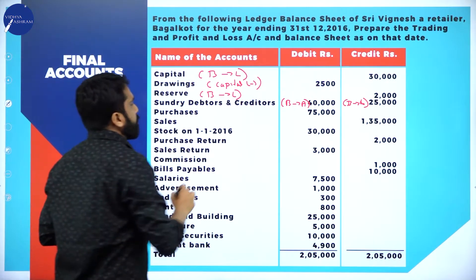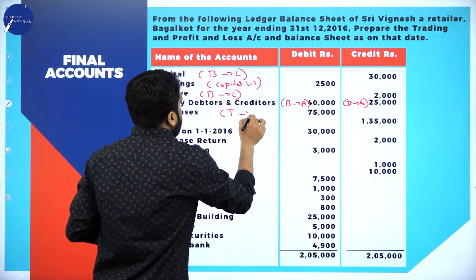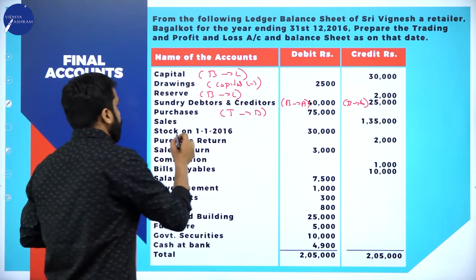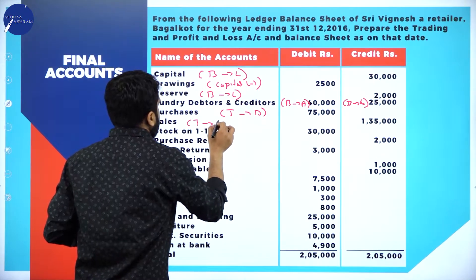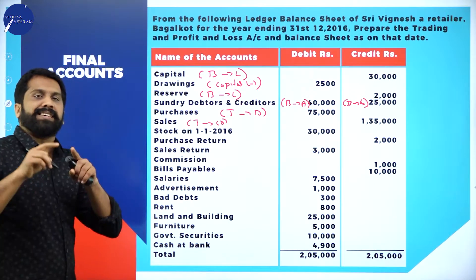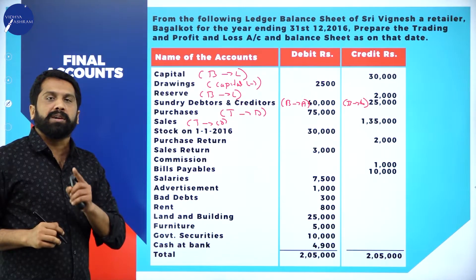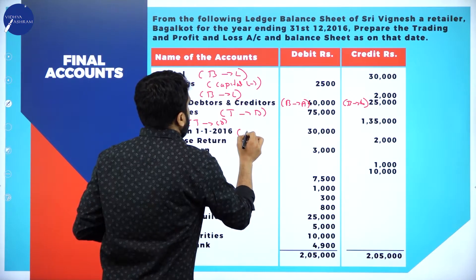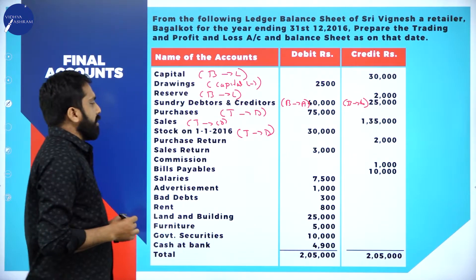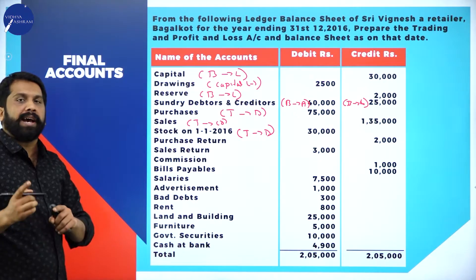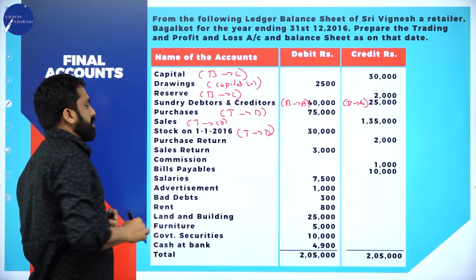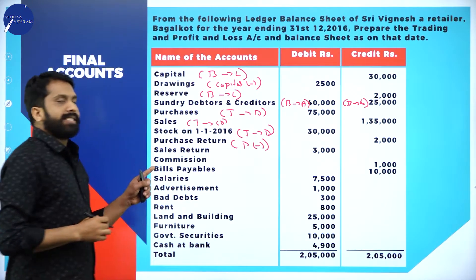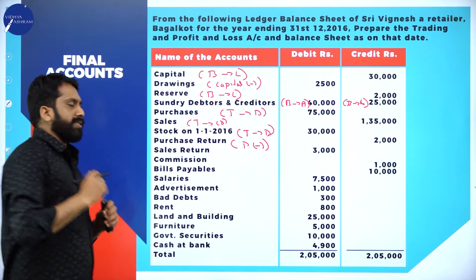Purchases comes under trading account debit. Sales comes under trading account credit. Opening stock comes under trading account debit side. Purchase return - you have to minus from purchases. Sales return - you have to minus from sales.